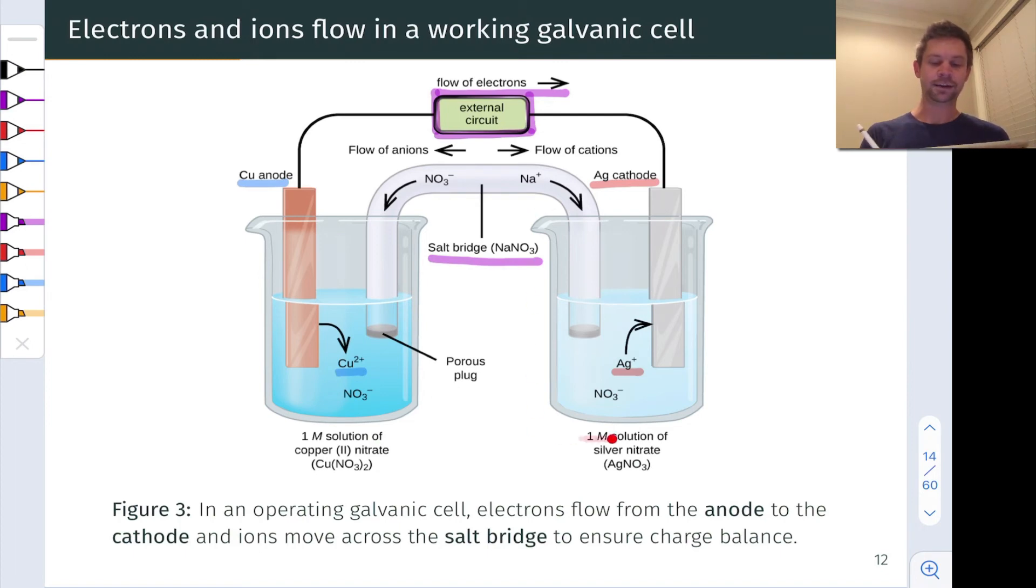Likewise, if we think about the right-hand side, negative charge would build up here as the silver plus ions are brought out of solution and plate onto the silver metal. Na plus ions will flow this way and we'll end up maintaining charge neutrality. This allows electrons to flow through the wire and a fixed voltage to be delivered to our external circuit without any of this problematic capacitance effect.